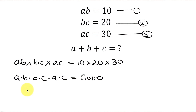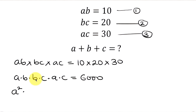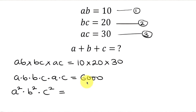Now, a times a gives a squared, b times b gives b squared, and c times c gives c squared. So we have a squared times b squared times c squared, and this is equal to 6000.